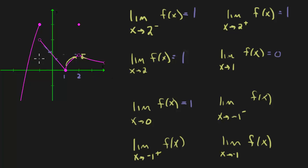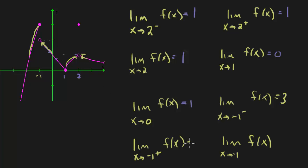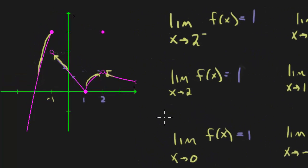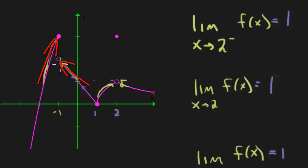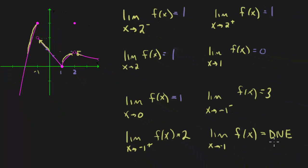Now the limit as x approaches negative 1 from the left: coming in from the left, the y-value looks like it would have been 3. From the right: approaching negative 1 from the right, the y-value looks like 2. Finally, the general limit as x approaches negative 1 has no direction sign, so from both left and right. The left was 3 and the right was 2, so this limit does not exist — DNE — because the left and right don't match.